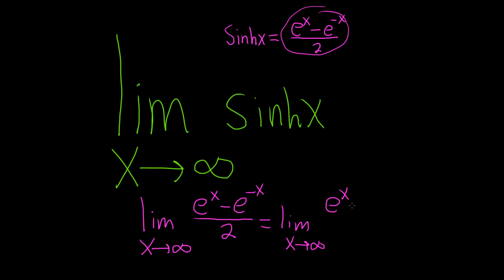This is e to the x minus 1 over e to the x, and it's all being divided by 2, right? Because you can bring this downstairs, and it makes the exponent positive.